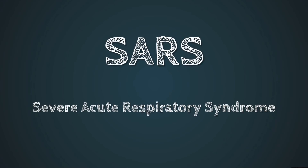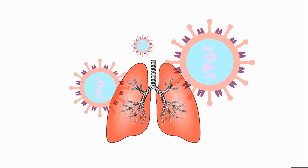Coronaviruses often attack the respiratory cells, causing respiratory tract infections in humans and some other animals, making it very hard to breathe. Survivors of the current coronavirus have described it as breathing through a paper bag with one lung. These viruses specifically attack the lungs and the apparatus we need to breathe, which is why it is incredibly deadly for smokers or people who already have difficulty breathing.